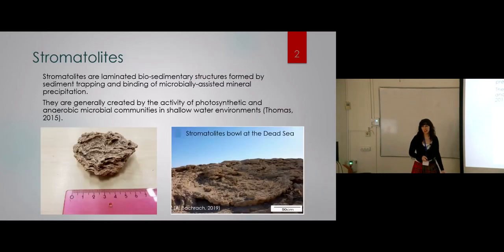So first of all, what are stromatolites, except for being a really long word? They're laminated biosedimentary structures, forming and fossilizing from environments of microbial communities, microbial mats, in shallow water environments. These microbial communities are usually constructed by a first top layer of photosynthetic microbial communities, and the deep layers are usually anaerobic microbial communities, both which help with precipitation and binding and trapping sediment.